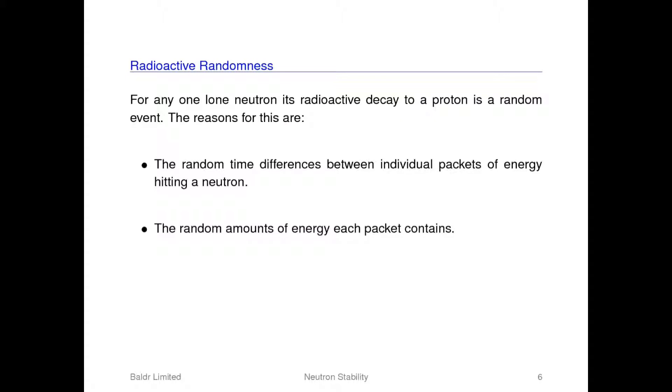For only one neutron or a nucleus, its radioactive decay is a random event and the reason for this randomness is down to the packets of energy hitting it. This is because the rate at which these objects are being hit is not a constant and each of the packets of energy contains a different amount.